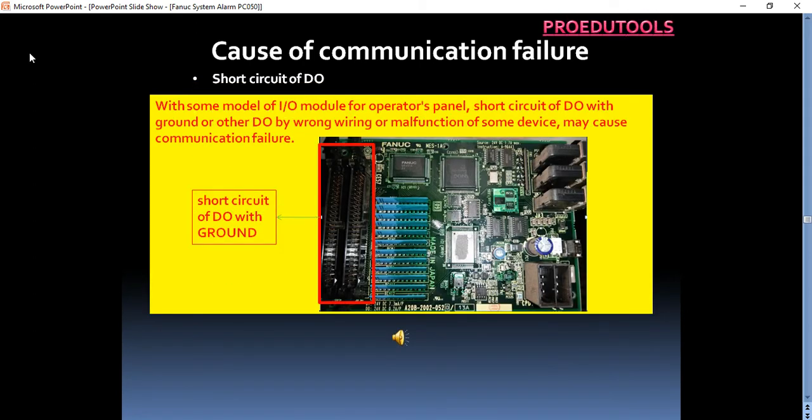Short circuit of DO. With some model of IO module for operator's panel, short circuit of DO with ground or other DO by wrong wiring or malfunction of some device may cause communication failure.